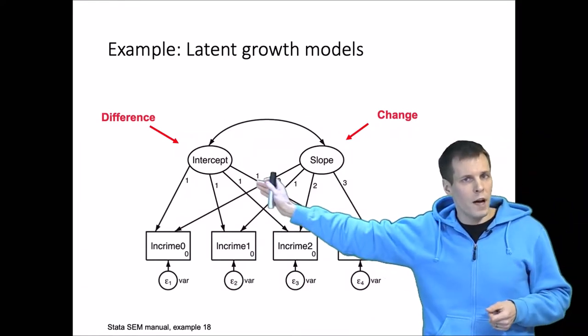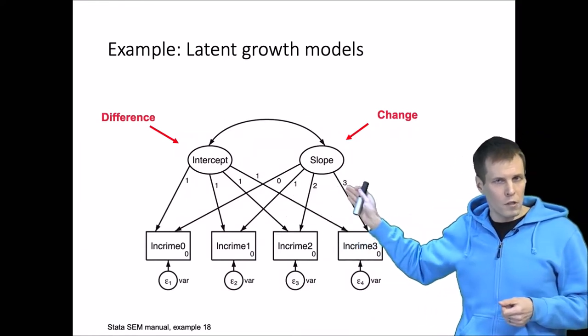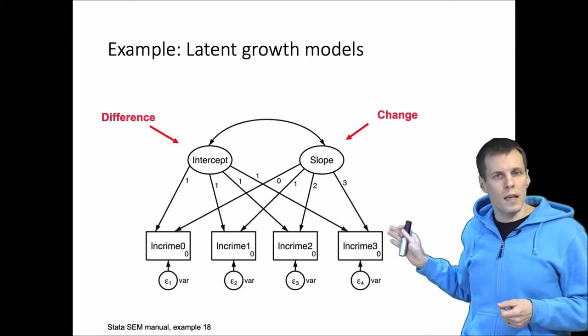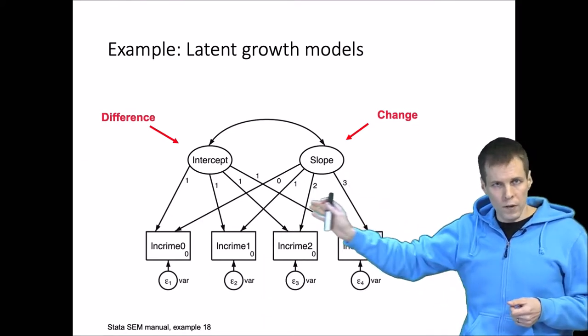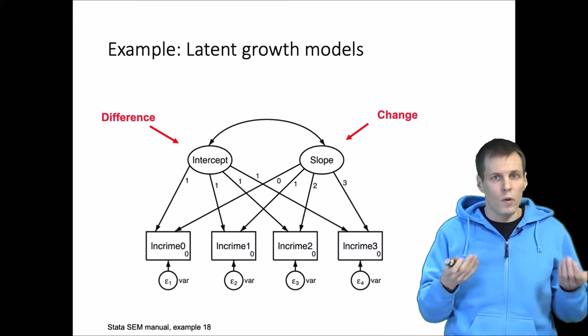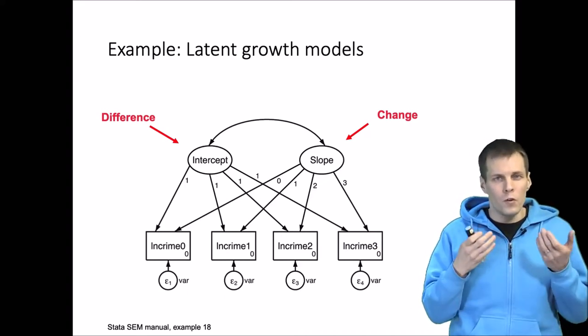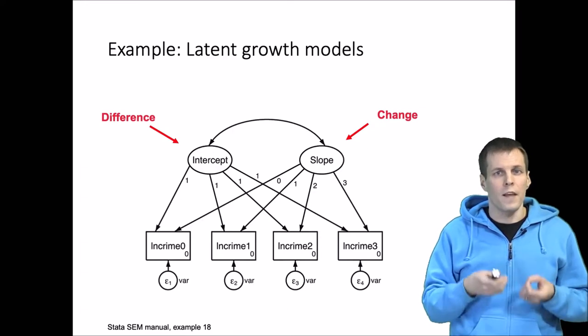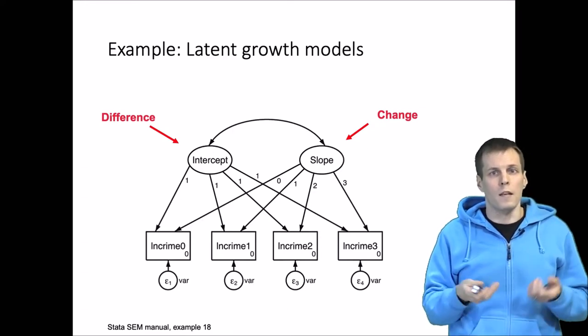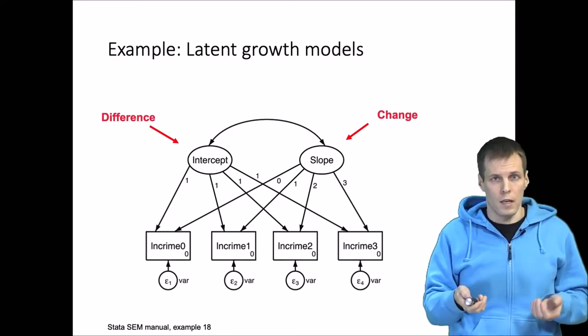We have a latent variable intercept and a latent variable slope. This is actually exactly the same model as the one before, but instead it is shown as a path diagram. So these latent variables, even if you don't do factor analysis, are very commonly used in different estimation techniques and modeling approaches.